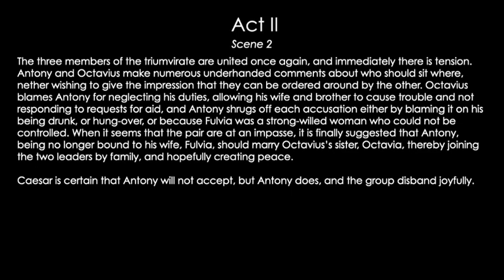When it seems the pair are at an impasse, Octavius essentially says he can't be in an alliance with Antony anymore. Agrippa suggests that Antony should take Octavius's sister, Octavia — thereby joining the two leaders' families and creating peace. Since Antony's wife has died and Octavia's husband also died, if they marry, that makes Antony and Octavius family, and you shouldn't fight family. Caesar is immediately certain Antony won't accept — but Antony does, and Agrippa disbands joyfully.